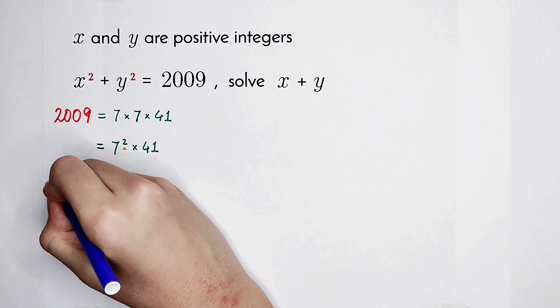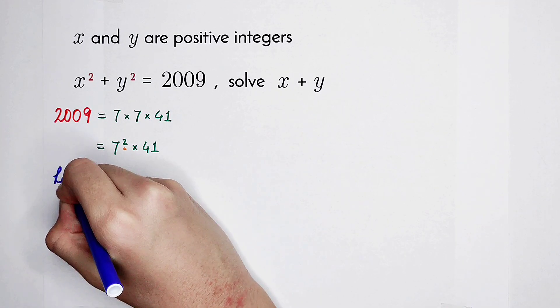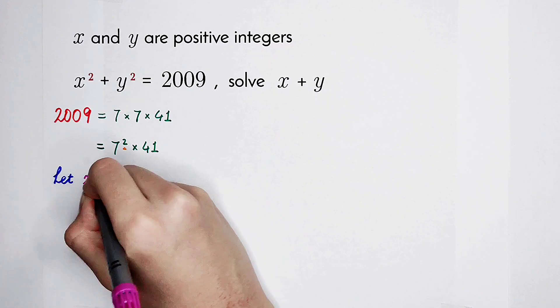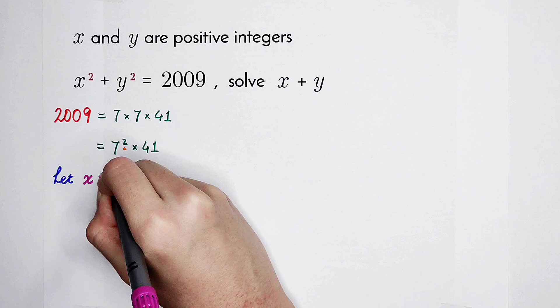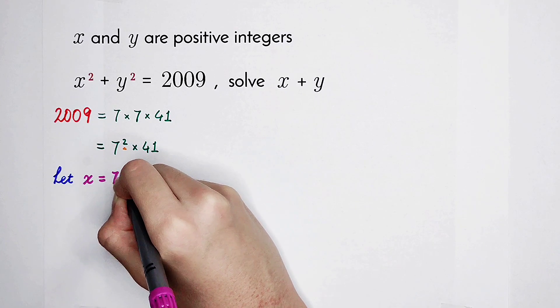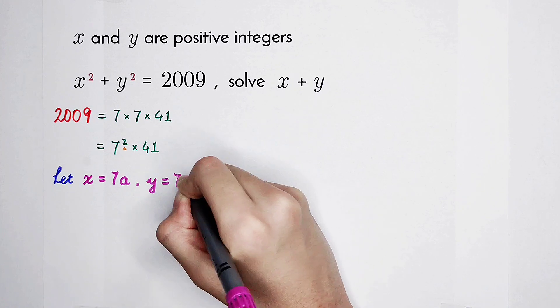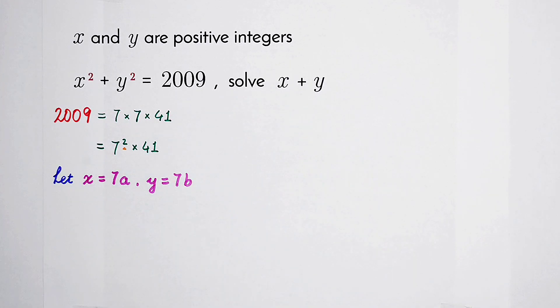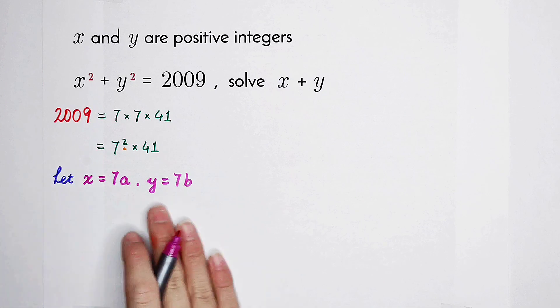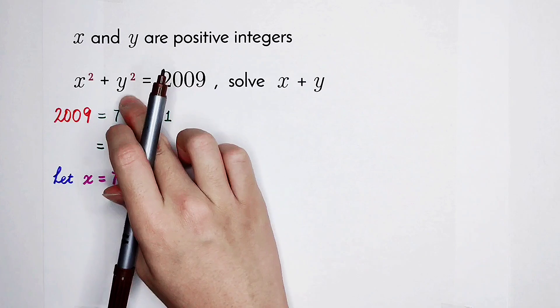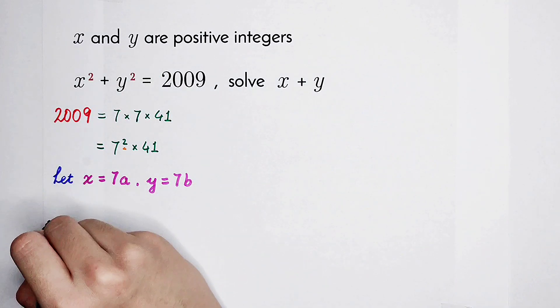We should, or we can, do some substitutions. If we do some substitutions, we can let x is equal to 7 times a, maybe, and y is 7 times b. Since they are both multiples of 7, substitute them into our original equation, x squared plus y squared. So, x squared plus y squared is equal to 2009.